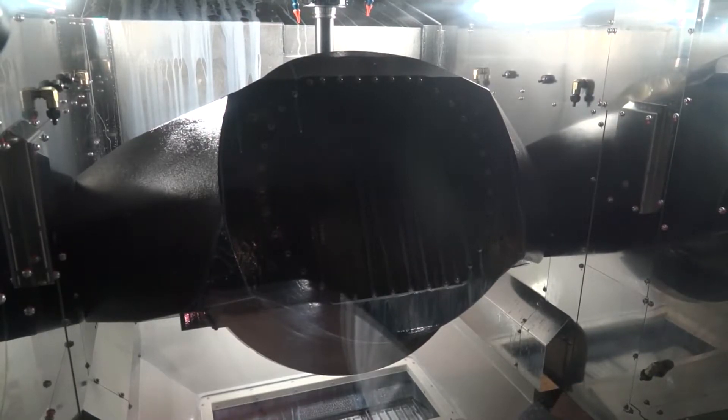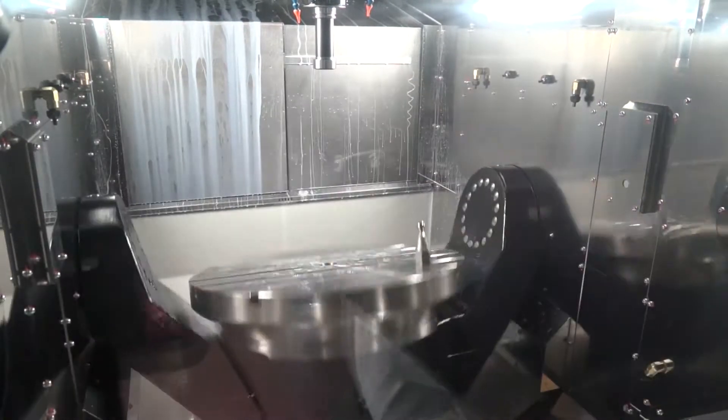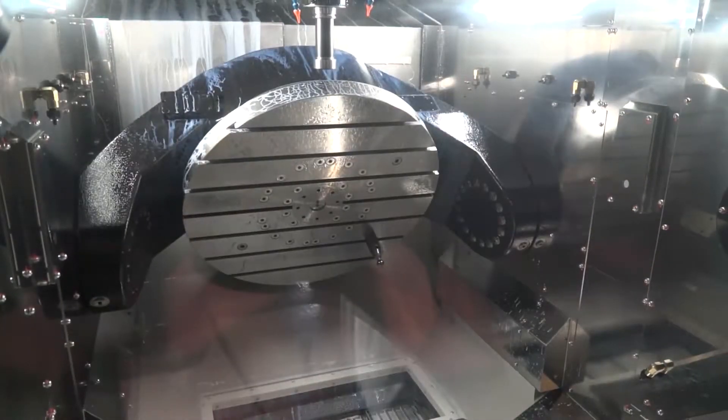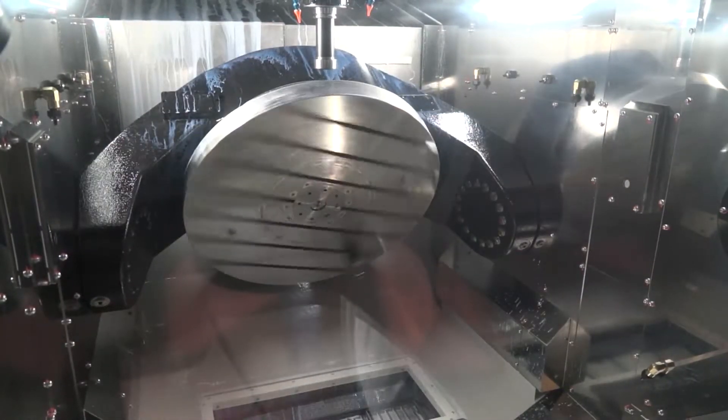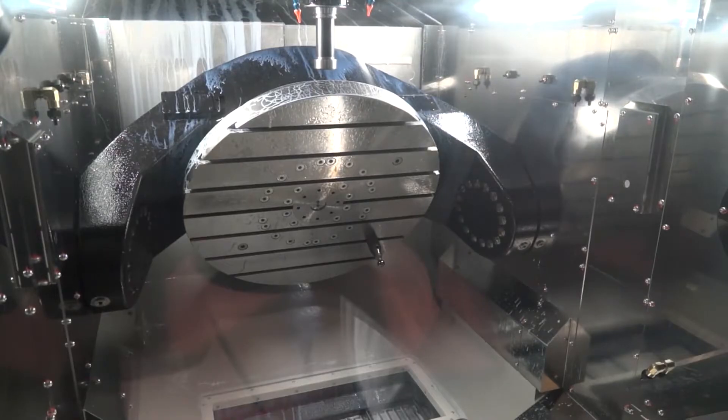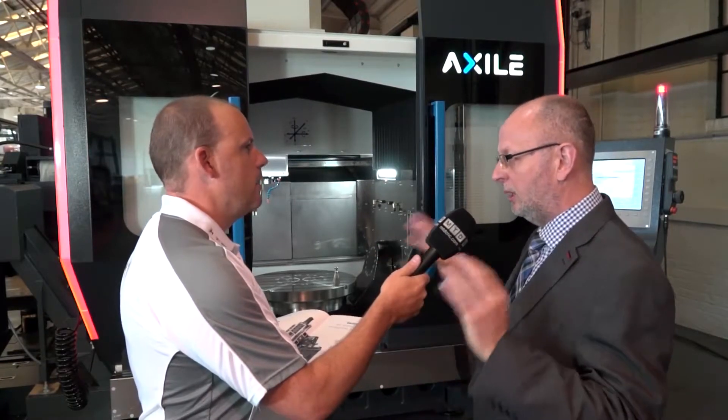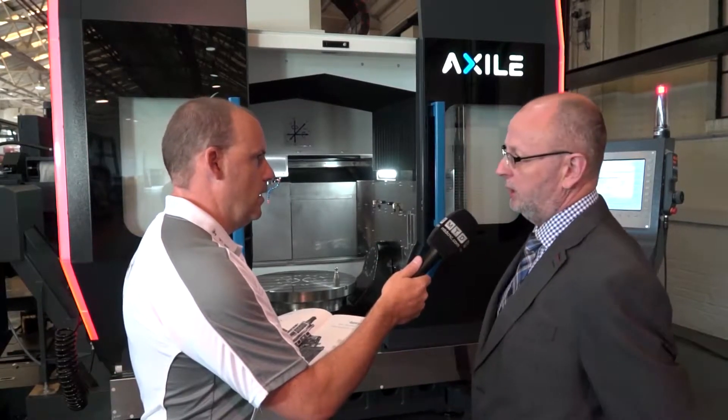What do you mean by three guideways on the Z? You have a linear guide left, right, and rear. So a three-point balance. A three-point—the way I would explain it is a three-point stool will never wobble. You've got the maximum rigidity from three points. It is the stiffest it could be.